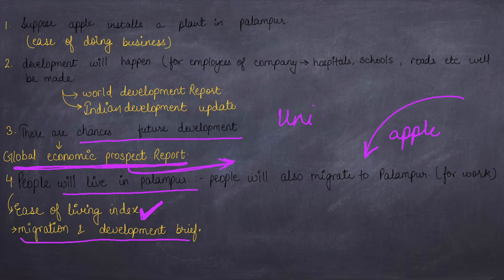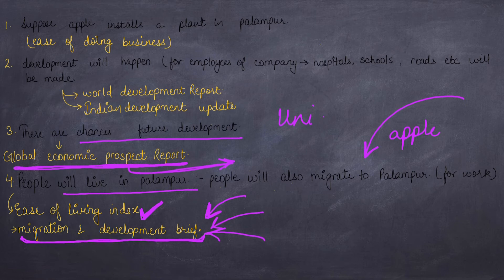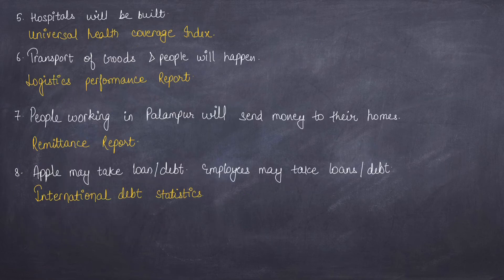Migration is happening — people are coming to Palampur from outside. How much migration and associated development is occurring is expressed by the World Bank through the Migration and Development Brief. And since people have arrived, hospitals will also open, so the Universal Health Coverage Index is also published by the World Bank.